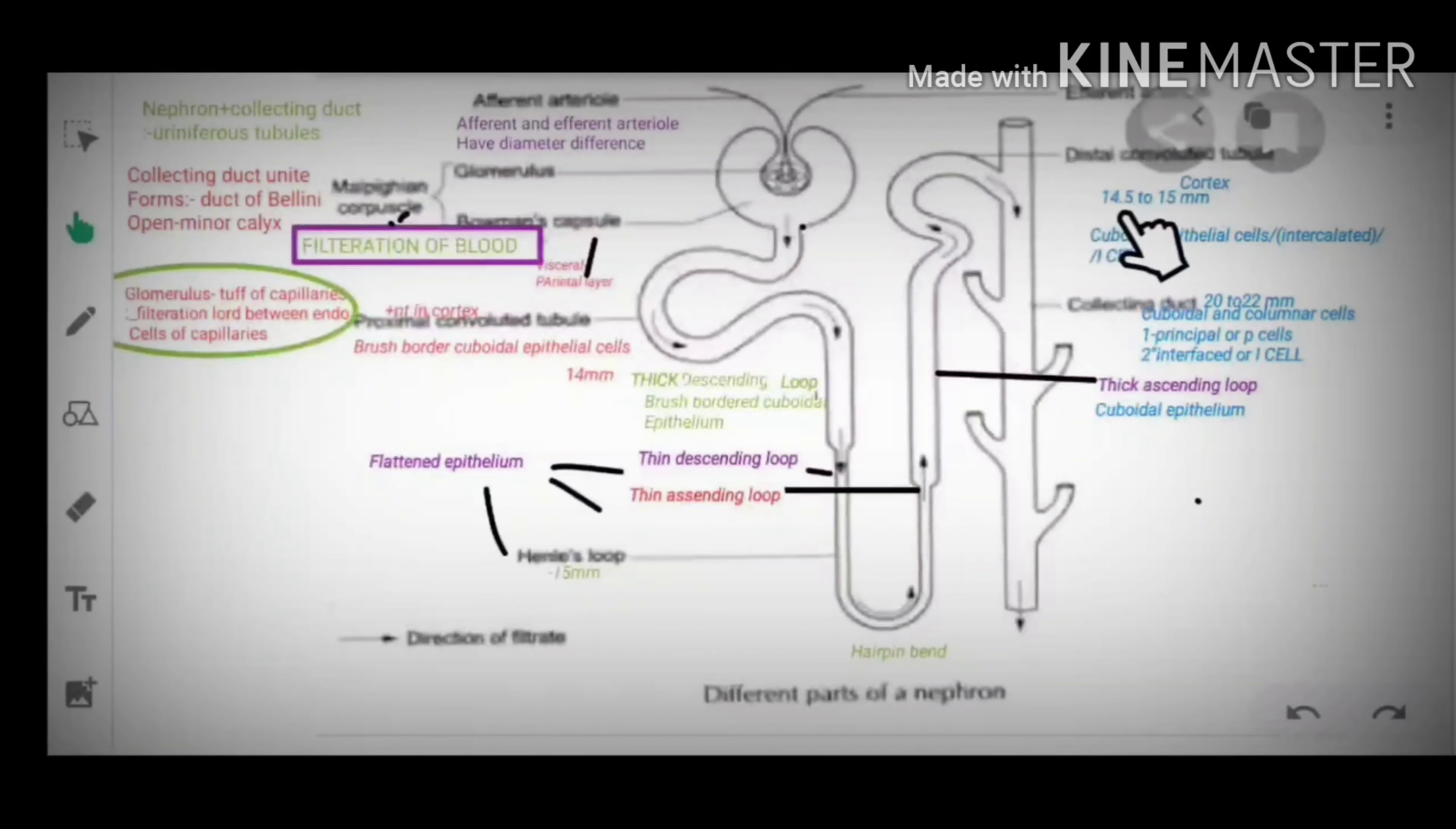Distal convoluted tubule is 14.5 to 15 mm and is also present in the cortex. It is made up of cuboidal epithelial cells or intercalated cells, also called as I cells.